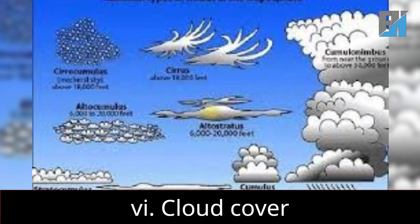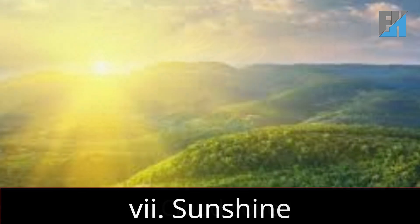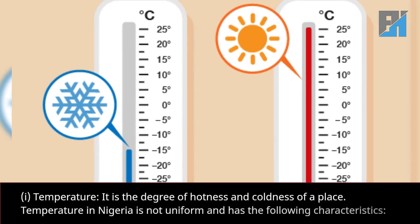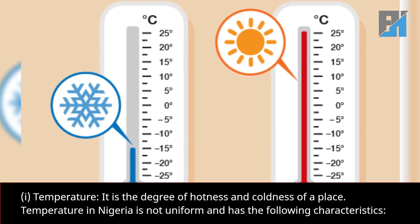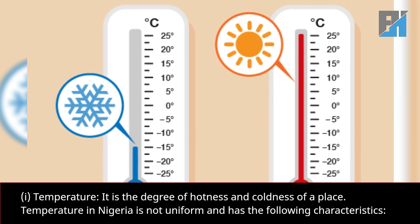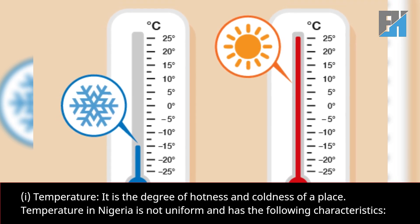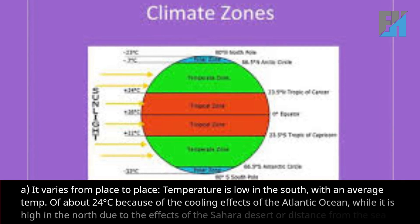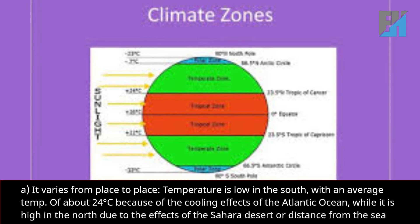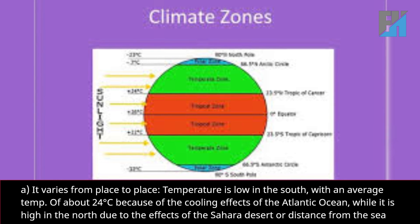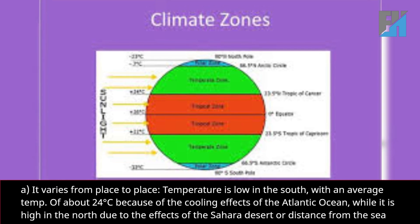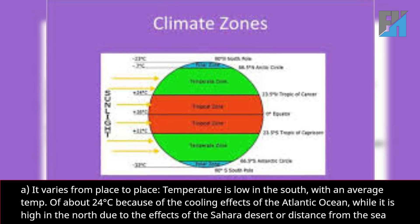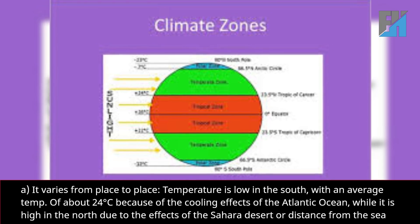Temperature is the degree of hotness and coldness of a place. Temperature in Nigeria is not uniform and has the following characteristics. First, it varies from place to place. Temperature is low in the south with an average temperature of about 24 degrees Celsius because of the cooling effects of the Atlantic Ocean, while it is high in the north due to the effects of the Sahara Desert and distance from the sea.